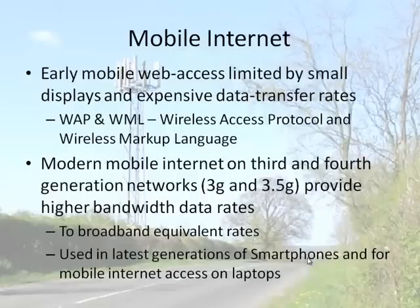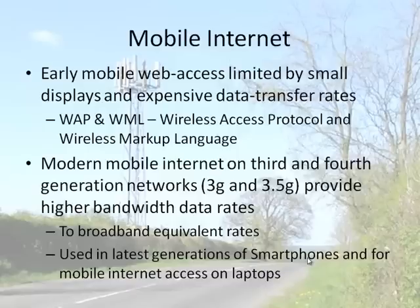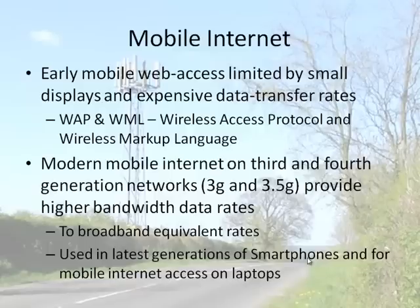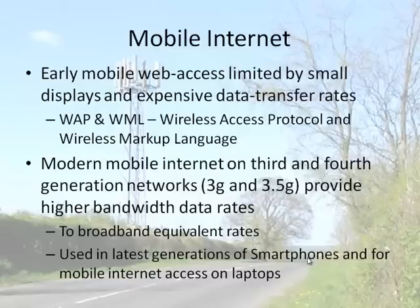Sometimes we want to get further than 30 to 50 meters from a wireless access point. A 3G modem connects us to the cell phone mobile network. Early mobile web access was limited by small displays and very expensive data transfer rates, using systems like WAP and WML — Wireless Access Protocol and Wireless Markup Language — to provide a cut-down internet interface. Modern third and fourth generation networks — 3G, 3.5G, and 4G — provide much higher bandwidth up to broadband-equivalent rates, used in iPhones, Android phones, and smartphones, as well as for mobile internet on laptops and tablets.